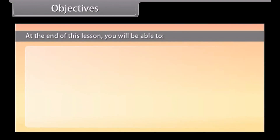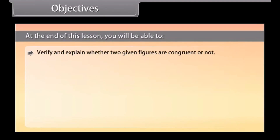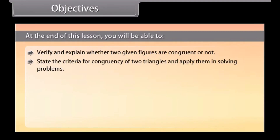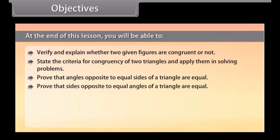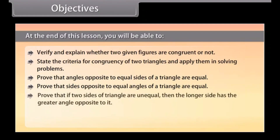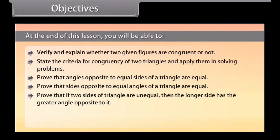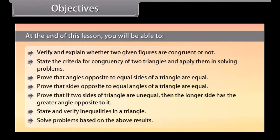At the end of this lesson, you will be able to: verify and explain whether two given figures are congruent or not; state the criteria for congruency of two triangles and apply them in solving problems; prove that angles opposite to equal sides of a triangle are equal; prove that sides opposite to equal angles of a triangle are equal; prove that if two sides of a triangle are unequal, then the longer side has the greater angle opposite to it; state and verify inequalities in a triangle; and solve problems based on the above results.